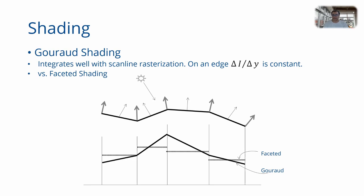First let us look at a few advantages of Gouraud shading. We have already seen that it integrates very well with scanline rasterization. If we had a surface made up of multiple polygons, these are the face normals and these are the vertex normals that you have computed by averaging the face normals.